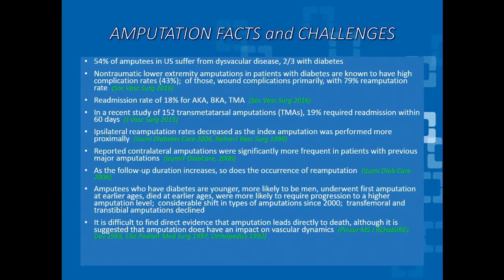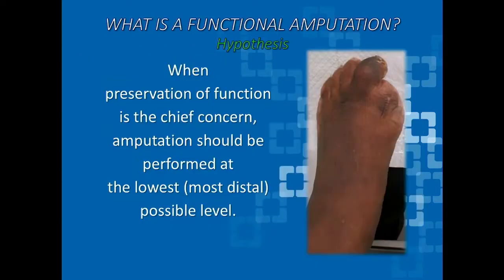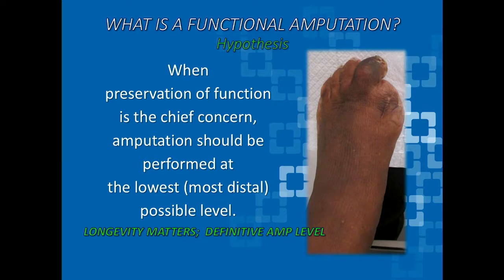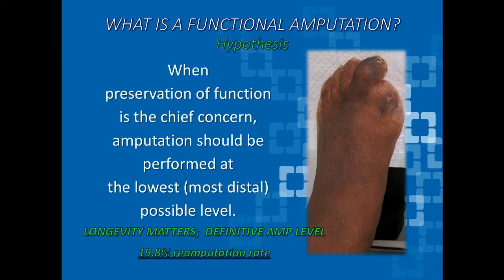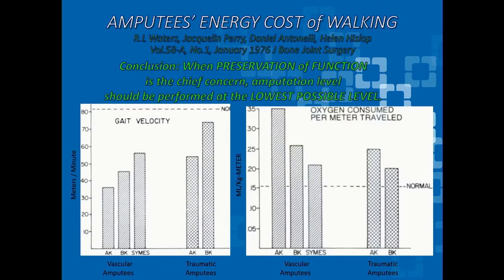This raises the question of whether a partial foot amputation is a more desirable and functional outcome than a major amputation. There's also a question whether we can really attribute mortality directly to the amputation itself. The contemporary thought is: when preservation of function is the chief concern, amputation should be performed at the lowest possible level. But there is a school of thought that questions that — even for partial first ray amputation, some surgeons say don't perform it because 20% go on to a higher level; go straight to the TMA. So longevity, preventing recurrence, and having a definitive amputation level all matter. The hallmark study on gait function has been cited repeatedly, and no study has exactly reproduced it.